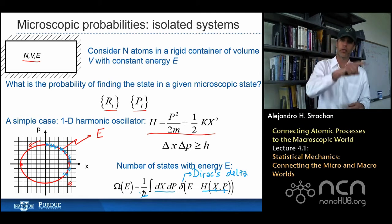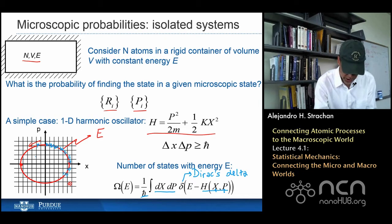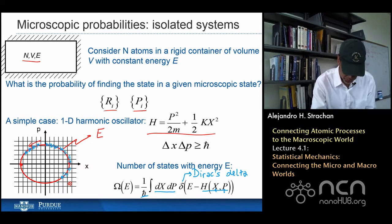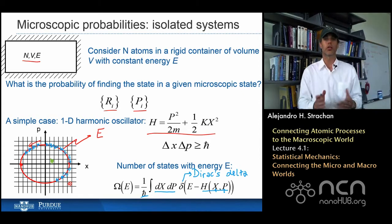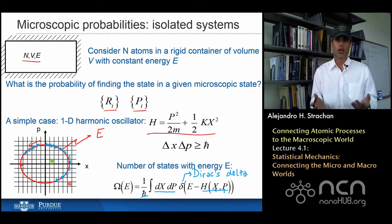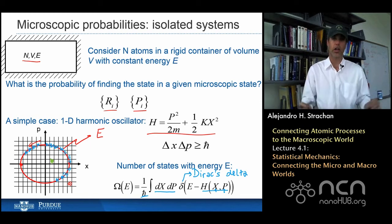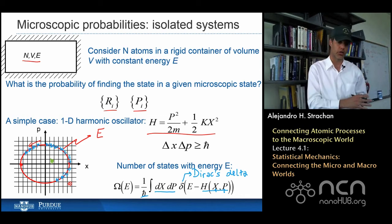Now the question is: as the system goes around, what is the probability of finding it here, or here, or here? The probability of finding the system in a state that has an energy different from the energy of my system is zero. So we know the probability is zero for any state that doesn't have the correct energy.